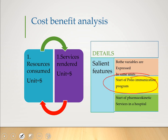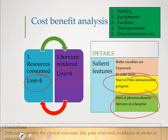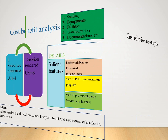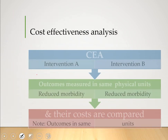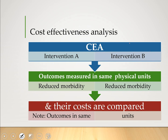In cost-benefit analysis, when you are going to start an immunization program or a pharmacoeconomic program, there is no comparison — the outcomes are expressed in monetary terms and the resources used are already in monetary terms. Then we talked about cost utility analysis and cost-effectiveness analysis, where intervention A and intervention B are compared within the same physical units.